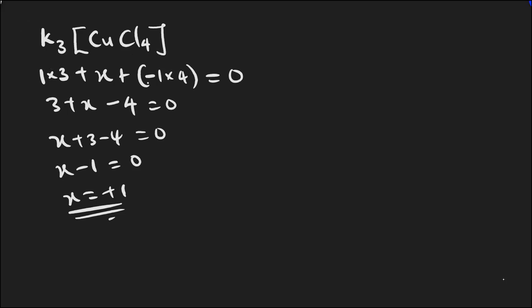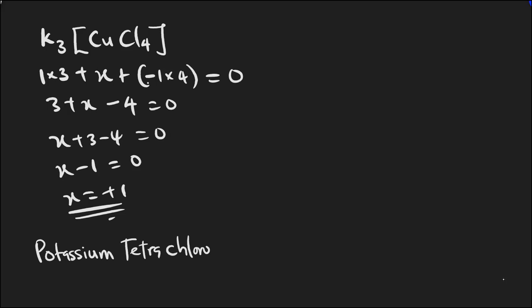We name the potassium first because it is the cation, then name the complex as the anion. For anions, the central metal ends with the suffix '-ate.' So: potassium, then four chlorines giving 'tetrachloro,' then the central metal which is copper in its anionic form — 'cuprate' — with oxidation state +1. The name is potassium tetrachlorocuprate(I).